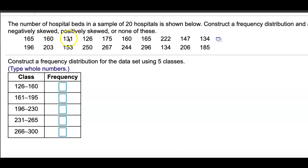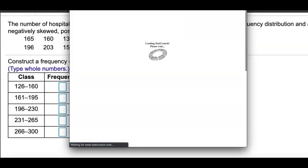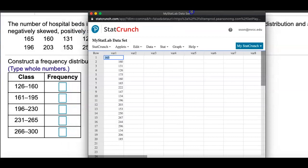Alright, we can go ahead and do the tally. I could cross out how many are between 126 and 160, but I don't have a pencil with me. I'm just going to do this on StatCrunch.